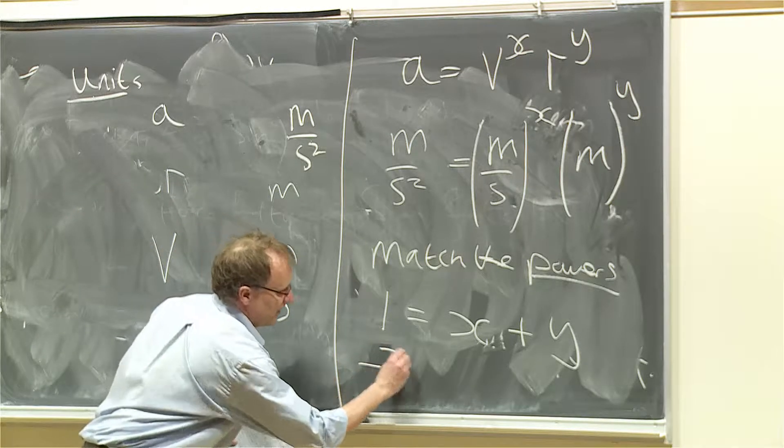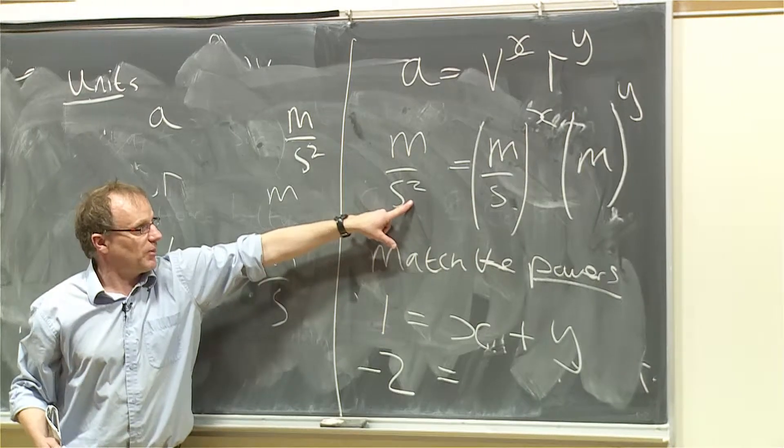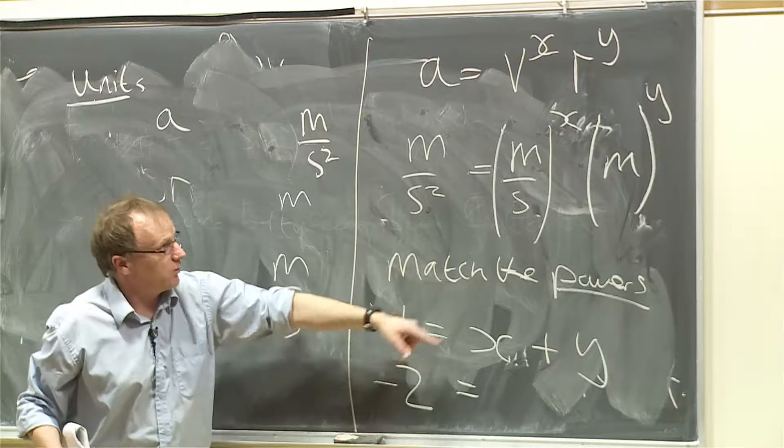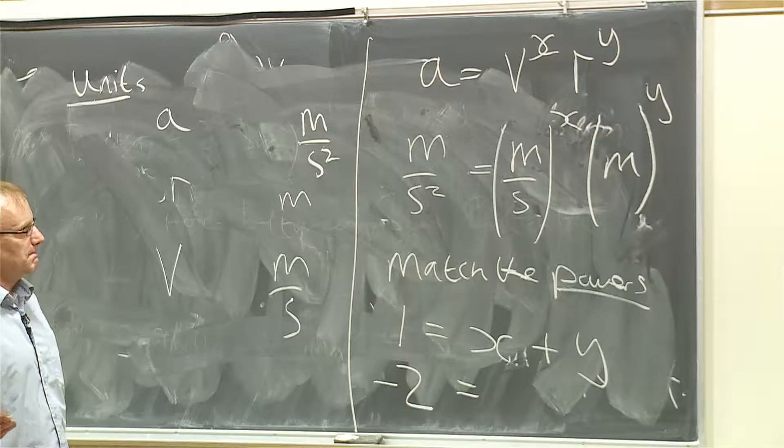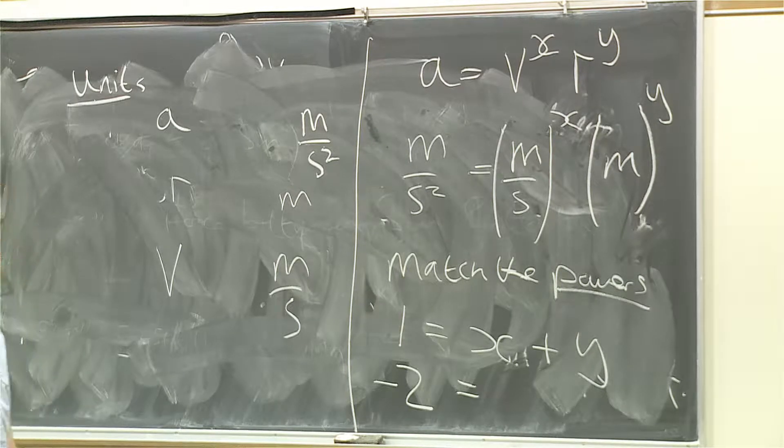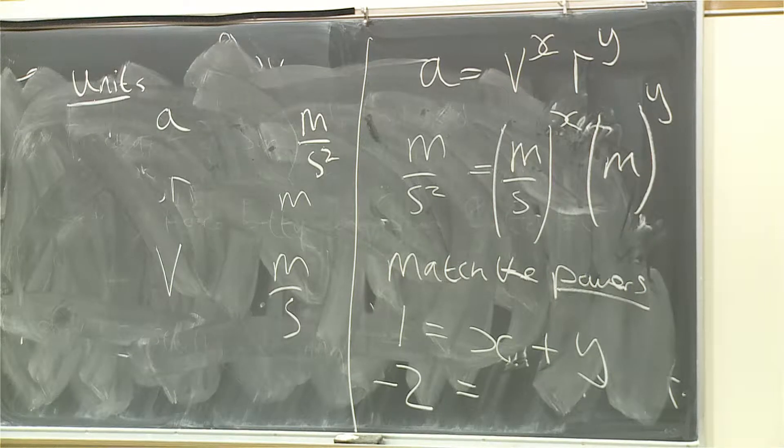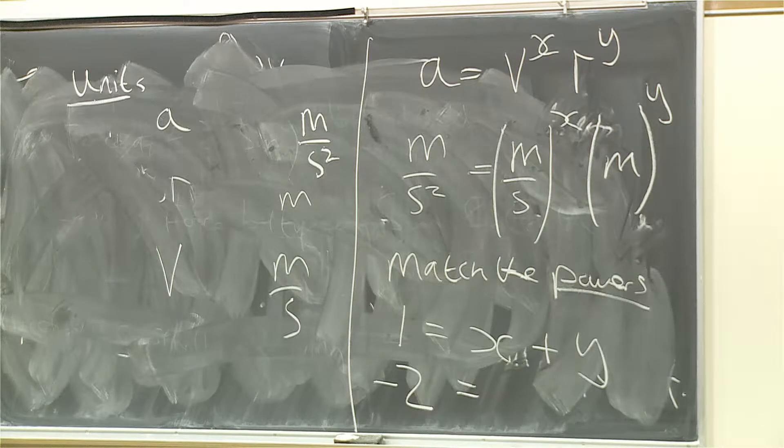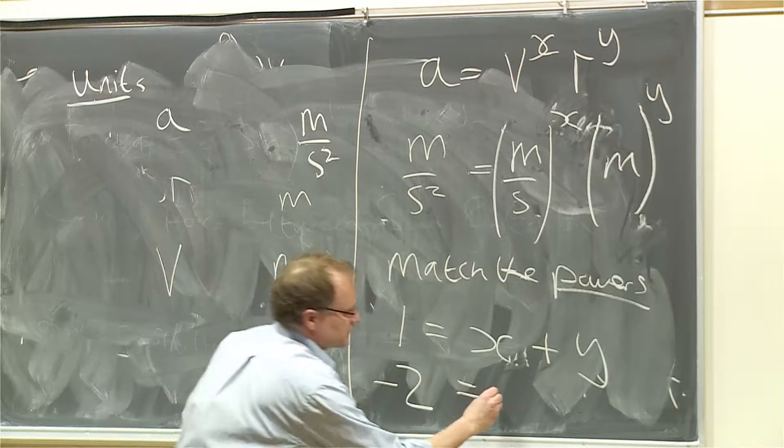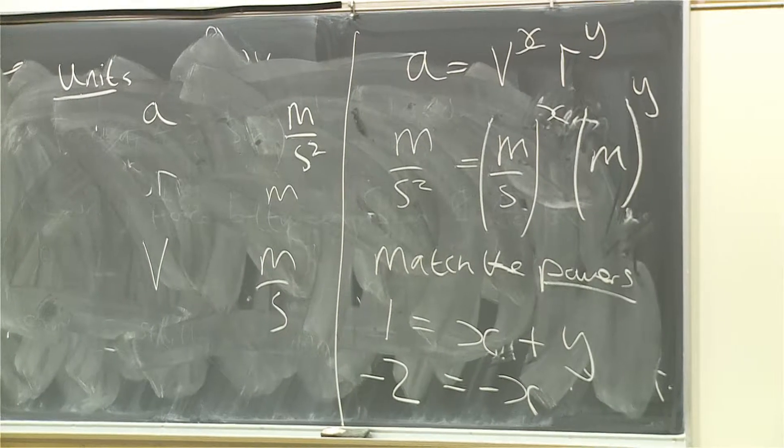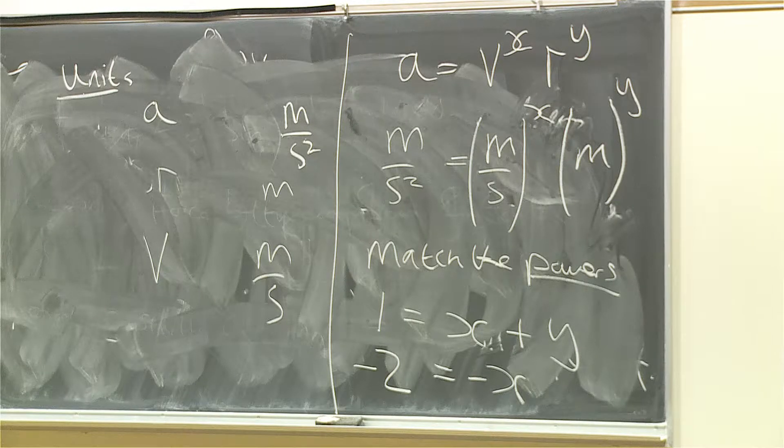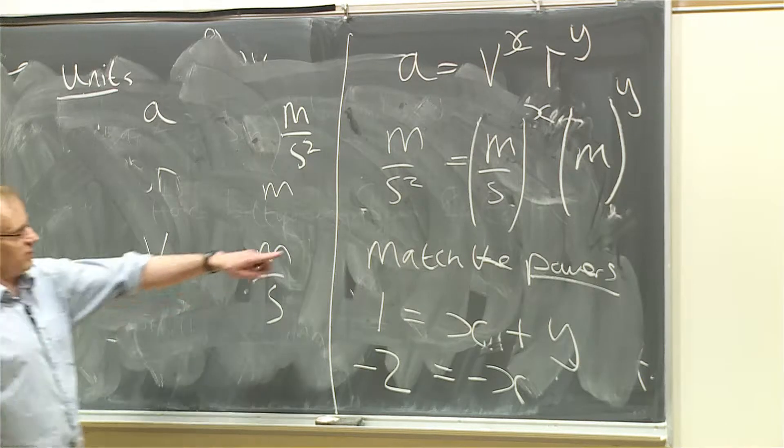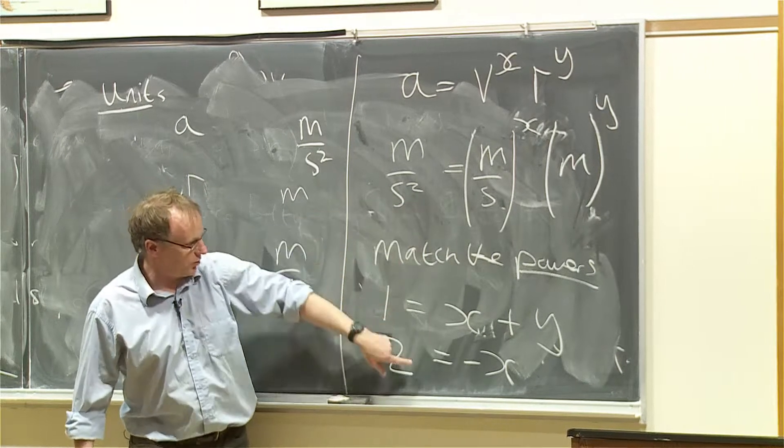And the other equation says minus 2, because this S is on the denominator. Minus 2 equals what? Anybody? Joe? No? Anybody? Someone else? That's close. A negative X, yeah. Negative X. There's a seat up here. Why is it negative X? Because the S is on the bottom here. So we have minus 2 is negative X.